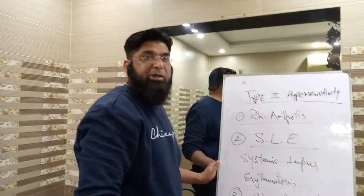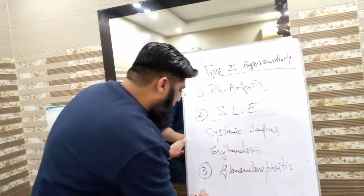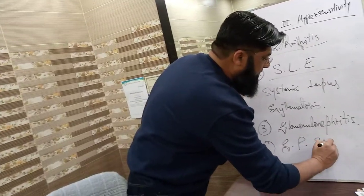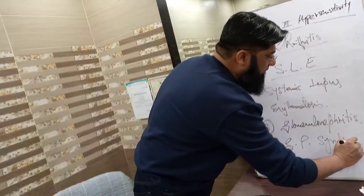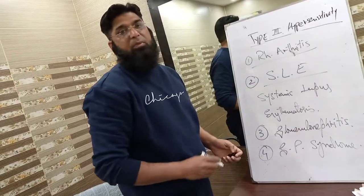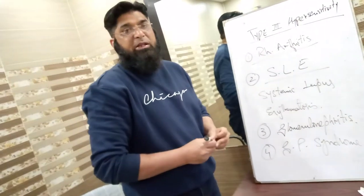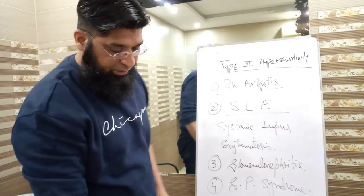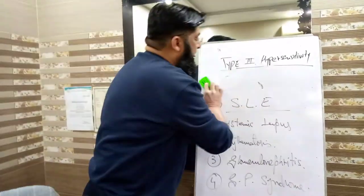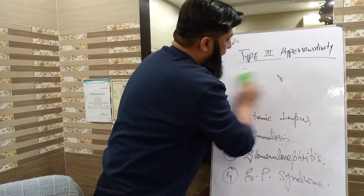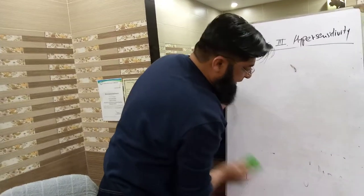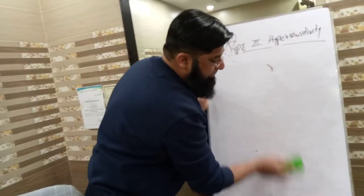Other examples include glomerulonephritis and Goodpasture syndrome. These are some of the clinical examples of type 3 hypersensitivity reaction. Now we compare type 3 hypersensitivity reaction with type 2 hypersensitivity.